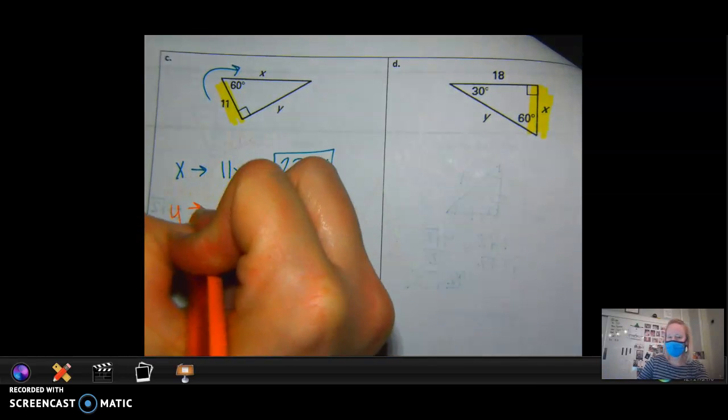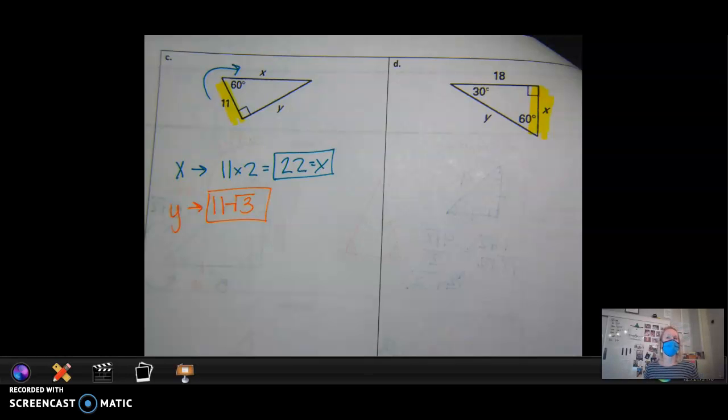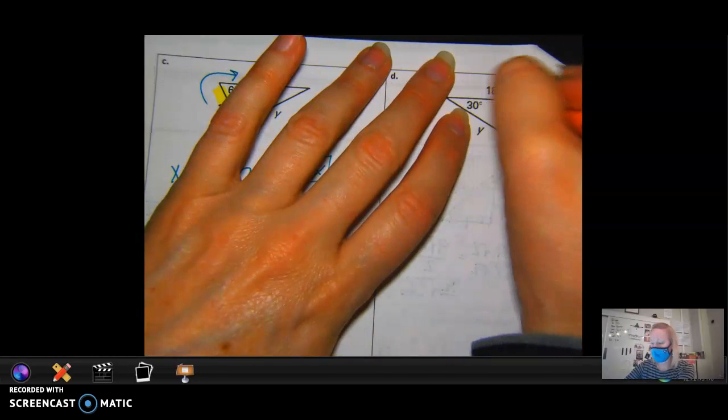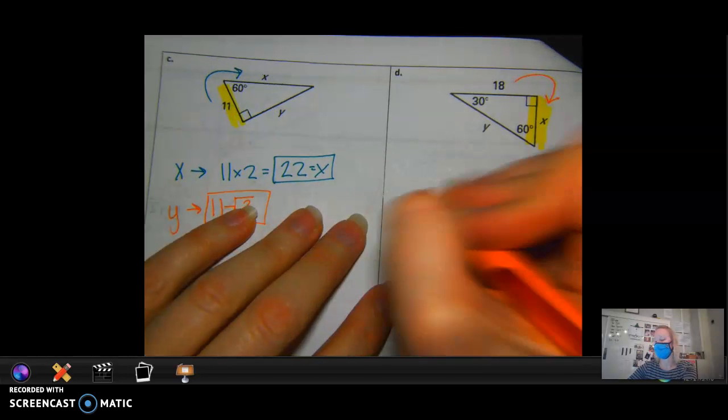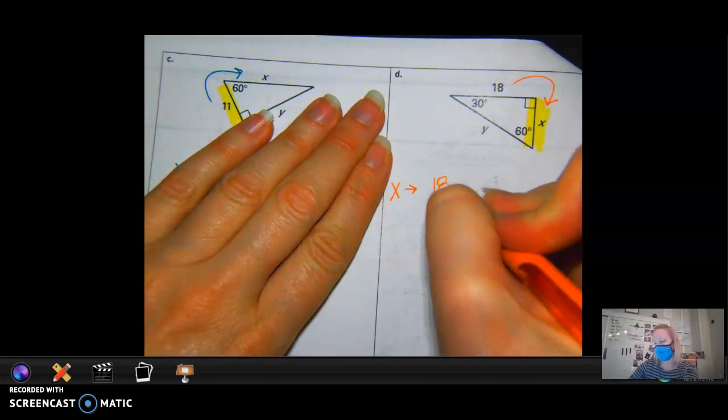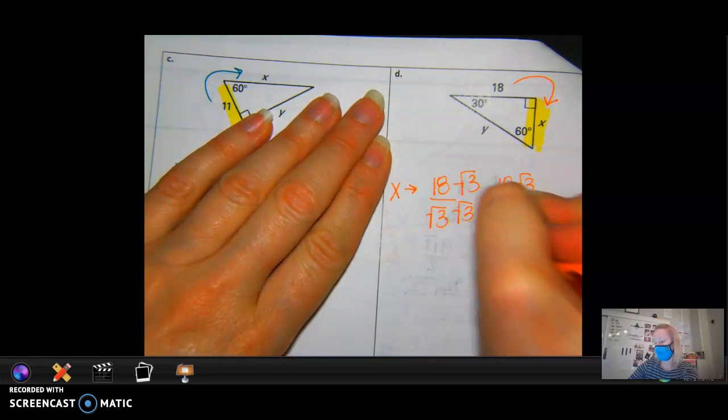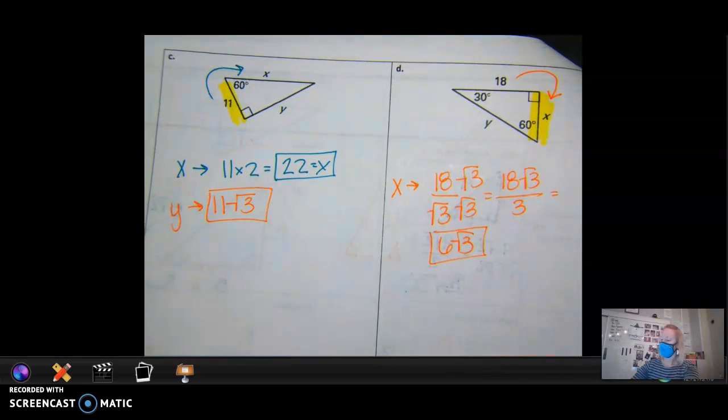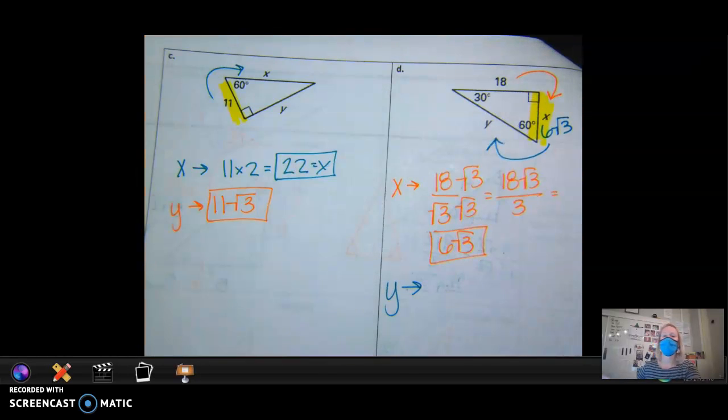And to get to y, what do I do to get to y? And so in that one, that's just my answer, right? Now on D, they did not give me my small side, but we always want to go to my small side first. So they're going from medium to small. So what would I do from my medium 18 to get x? There you go. Divide by the square root of 3. I rationalize because I don't want a radical in the denominator. So I get 18 square roots of 3 over 3. What is 18 divided by 3? Square roots of? Perfect.